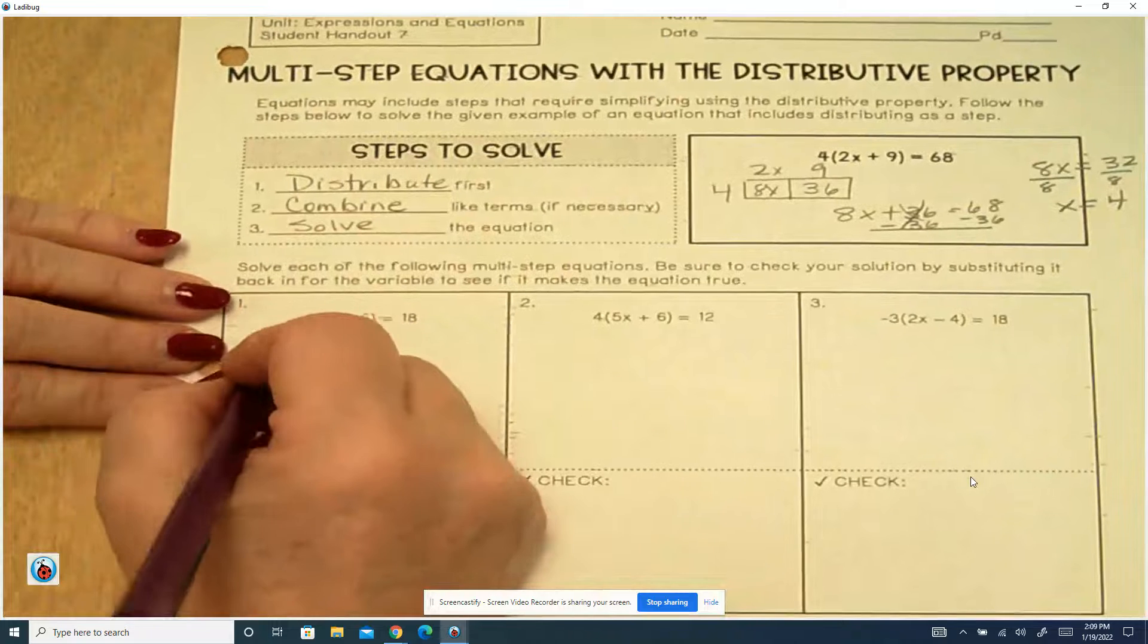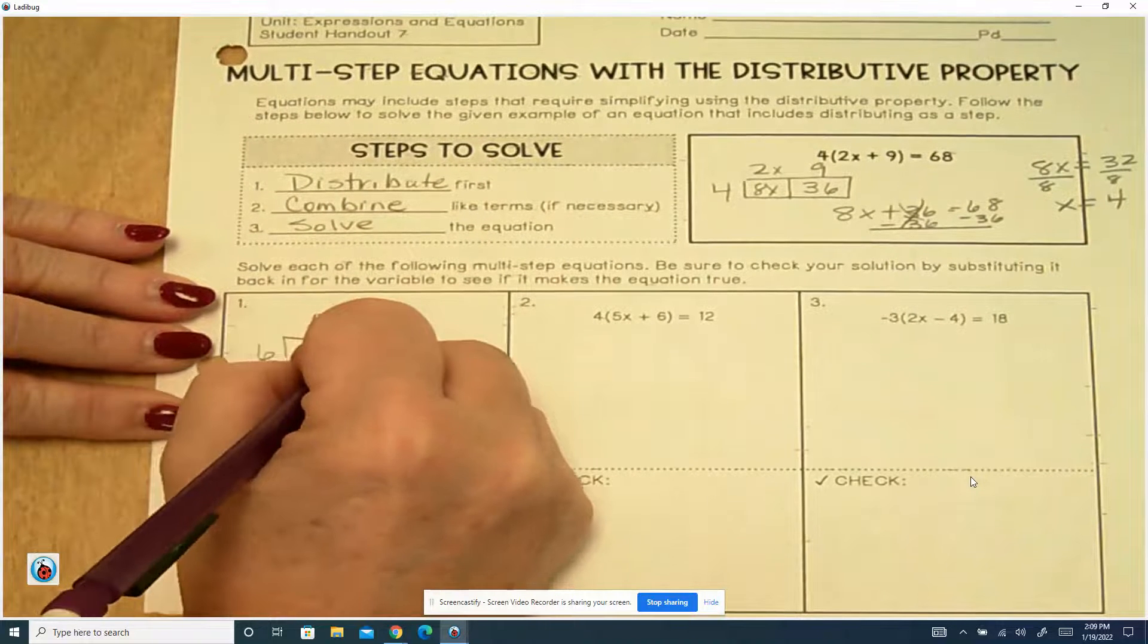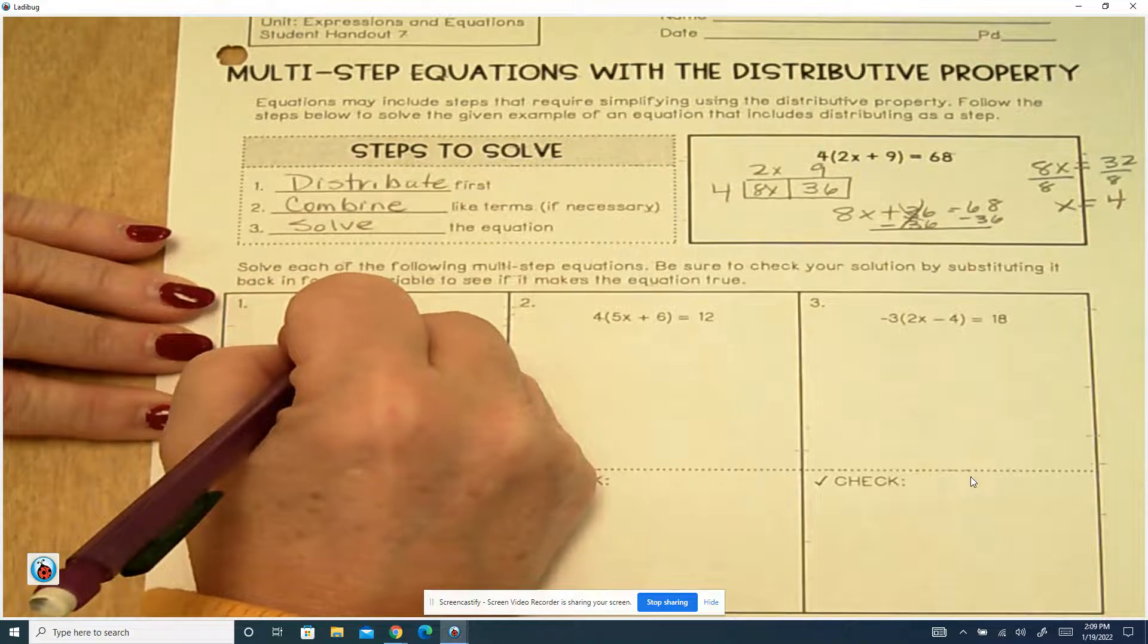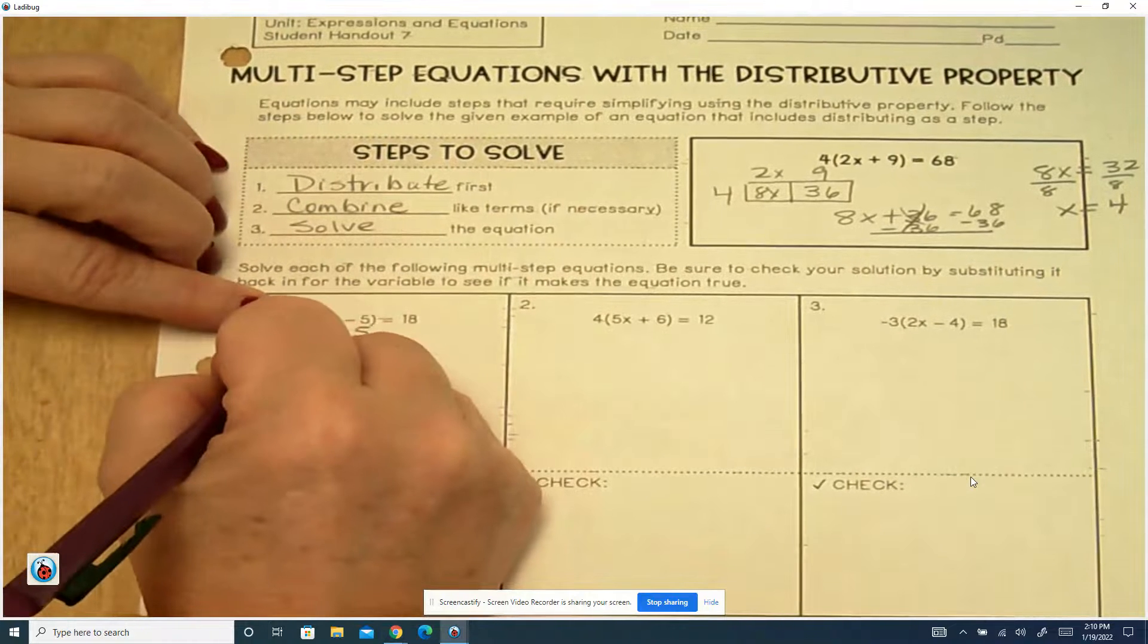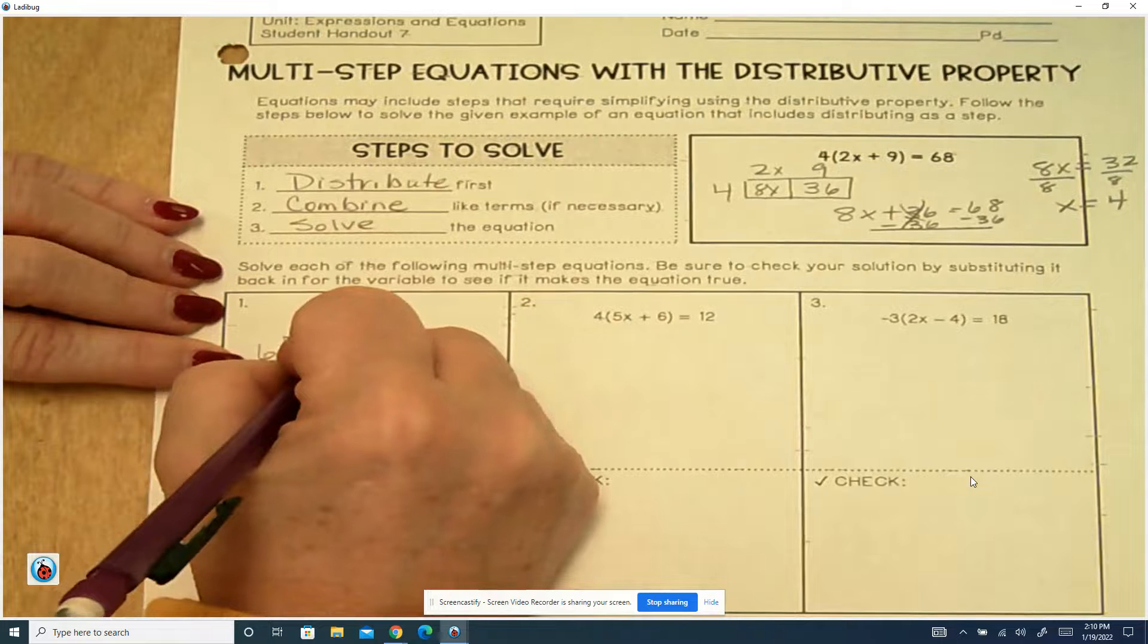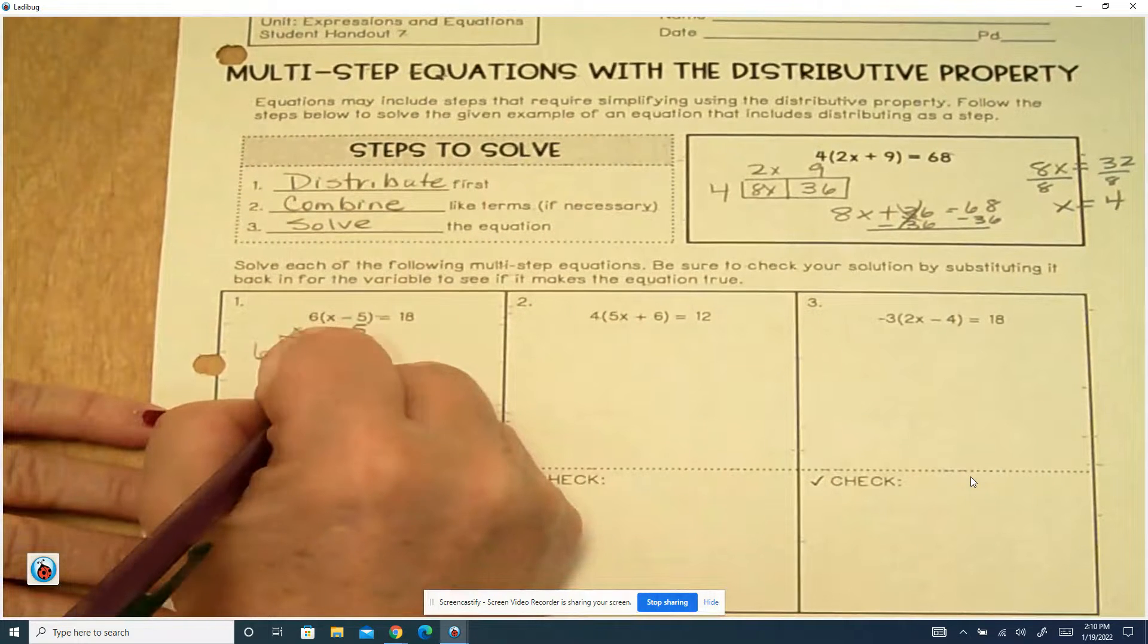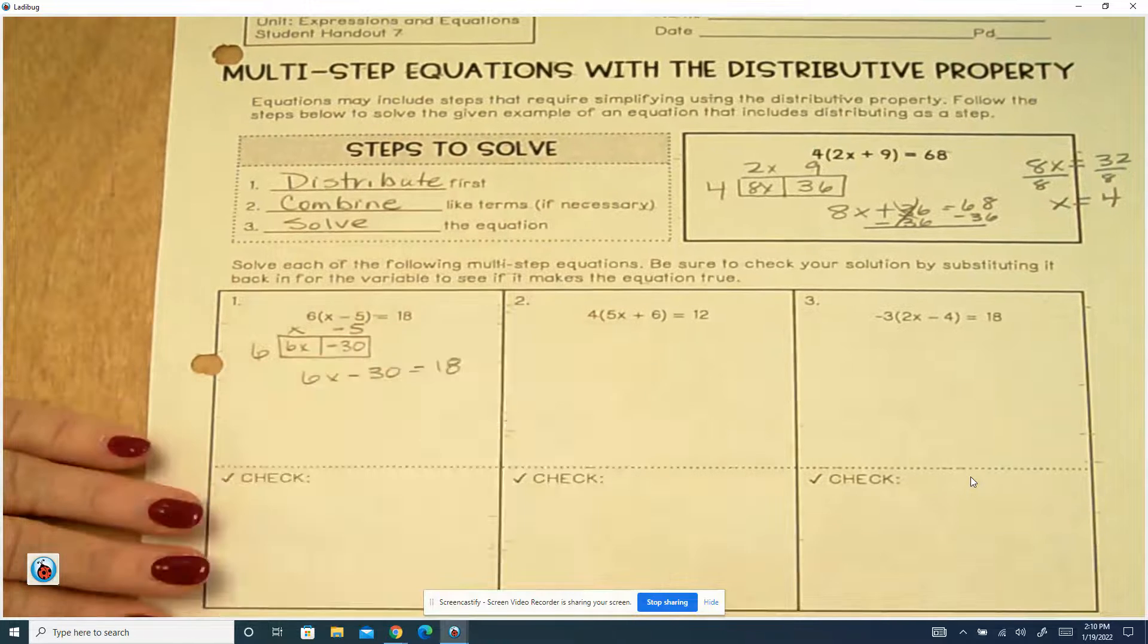There's two terms here as well, but watch because this has a negative in it. So we've got 6 in our two boxes. We've got x, and then a negative 5. Remember, we take the sign that's in front of it. So 6 times x is 6x, and 6 times a negative 5 is a negative 30. And when you bring it down, you have 6x minus 30 equals 18.